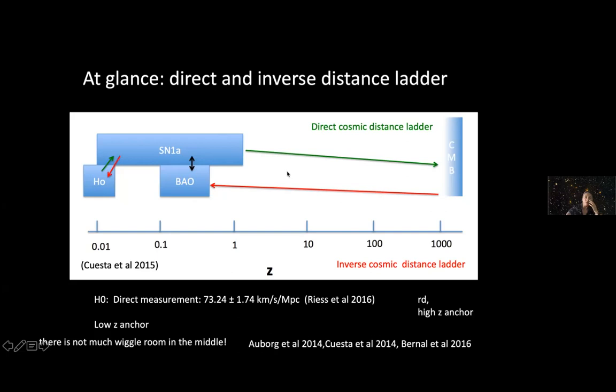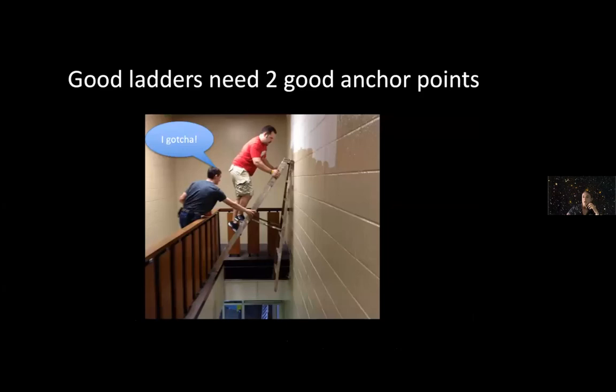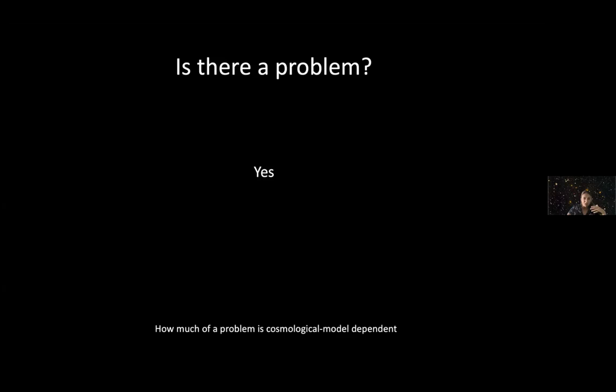Good ladders need two good anchor points, and the Caesar plot I showed seems to indicate there's something wrong with the anchor points. Is there a problem? After a lot of debate, most of the community will agree that yes, there is a problem. The disagreement, especially with the SH0ES collaboration determination, depending on how you do the statistics, is about 4 sigma. You can get to 5 sigma. Even one of the most convinced proposers that there was not a problem, Georgia Efstathiou, started to agree there's something we should look into.